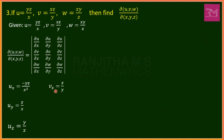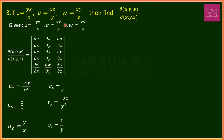For v = xz/y: del v/del x = vx = z/y. Treating x and z as constant, del v/del y = vy = −xz/y². Treating x and y as constant, del v/del z = vz = x/y.